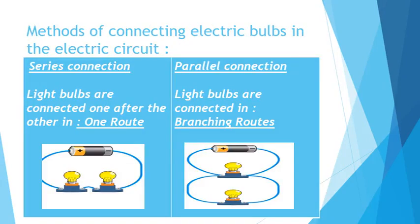This slide talks about methods of connecting electric bulbs in electric circuits. We have series connection and parallel connection. In series connection, light bulbs are connected one after the other in only one route — one wire, one path, one route. In parallel connection, light bulbs are connected in branching routes — different routes, different wires, forming branches. In series connection the light bulbs share the same route; in parallel connection each lamp has its own branch and its own route.